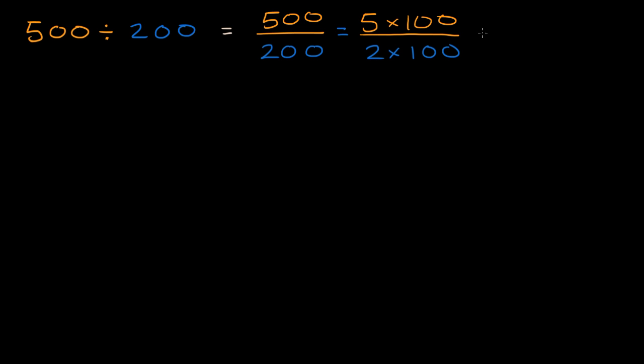So you could just view this. This is equal to five halves, five halves times 100 over 100. Times 100 over 100, which is just going to be equal to one.